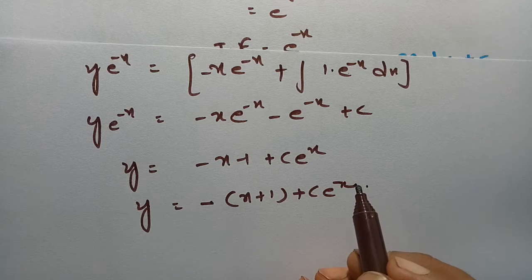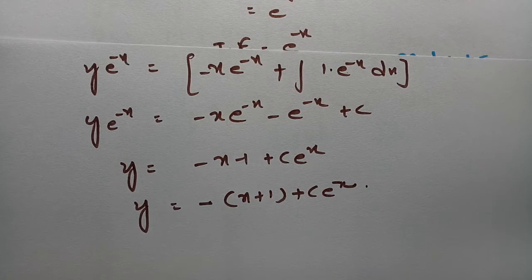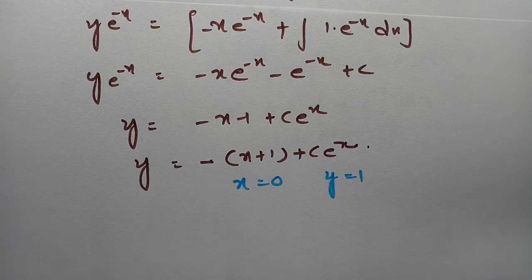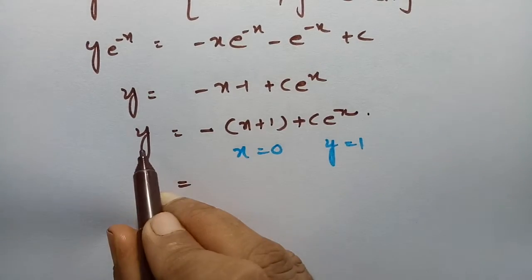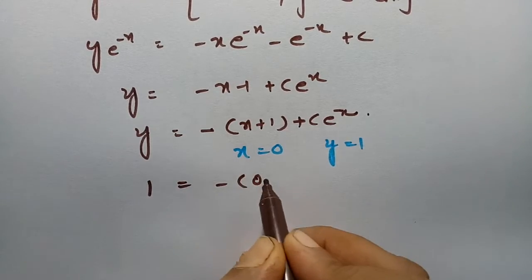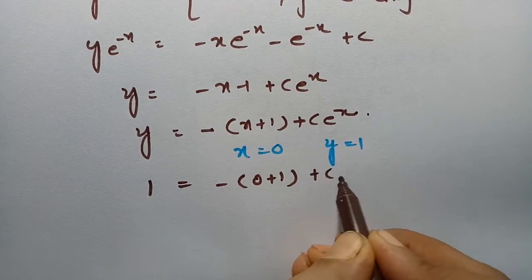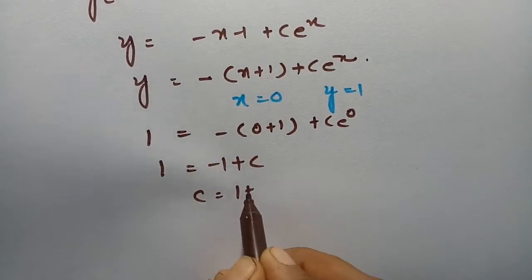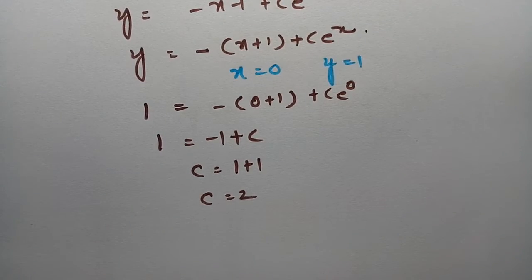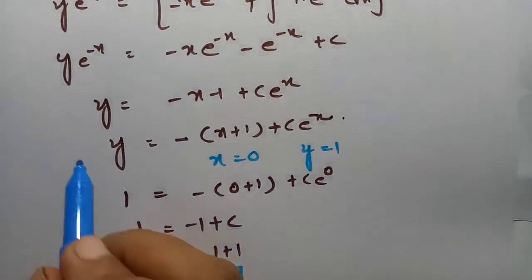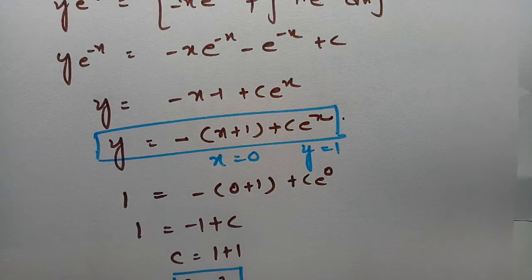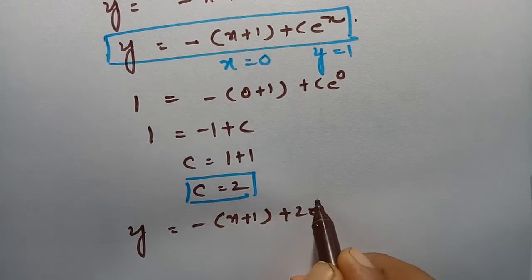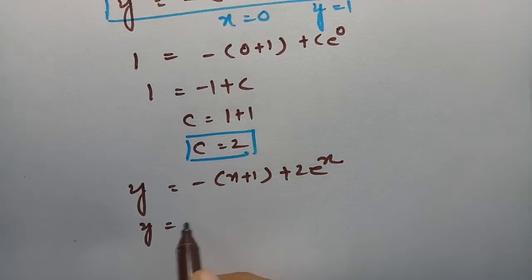Dividing throughout by e^(-x): y = -x - 1 + C·e^x. Now substituting the initial condition x = 0, y = 1: 1 = -(0) - 1 + C·e^0, so 1 = -1 + C, giving C = 2. The exact solution is y = -x - 1 + 2·e^x, which can be written as y = 2·e^x - (x + 1).